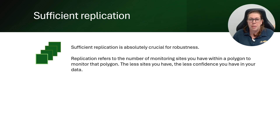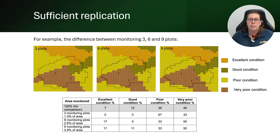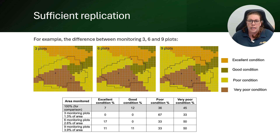Firstly, having a look at sufficient replication. This is a critical part of achieving robust monitoring, as the number of monitoring sites or the amount of monitoring data you collect has a direct relationship with how robust your data is. Basically, the fewer sites you have, the less confidence you can have in your data. We're going to look at an example — there's quite a lot going on in the slide but we'll talk through it. You can see three diagrams at the top representing a mapped area overlaid with a grid. Each cell in the grid is one hectare, with the project polygon outlined in black and a total area of 233 hectares. For this example we'll pretend we know the condition of every hectare within the polygon, so we can compare what's actually there with what the monitoring tells us.